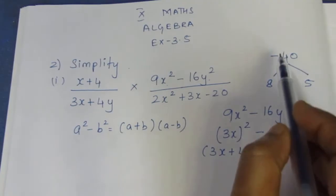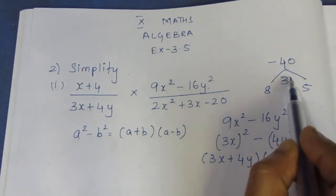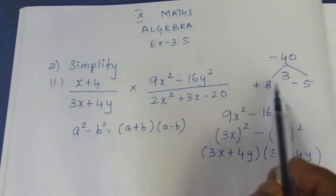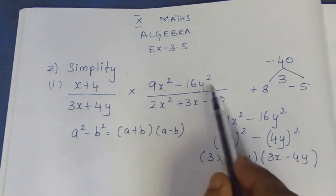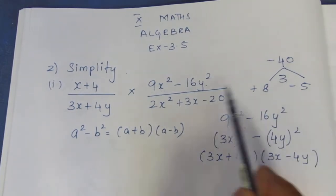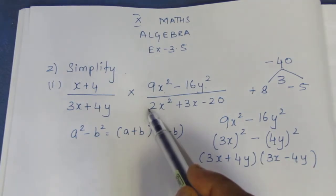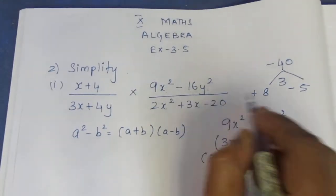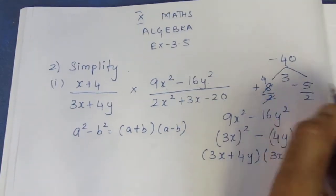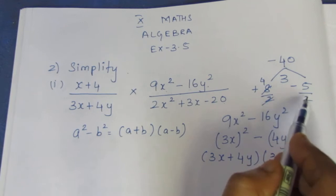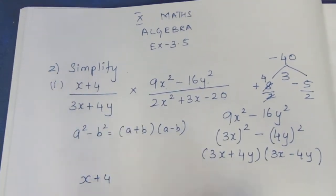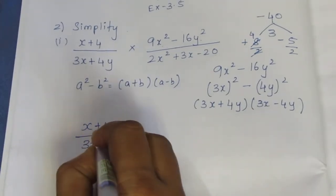Now for factorizing 2x square plus 3x minus 20: using 8 and minus 5, since 8 times minus 5 equals minus 40 and 8 minus 5 equals 3. So we split the middle term using these values. We divide and export: multiply x minus 4 by the factors.